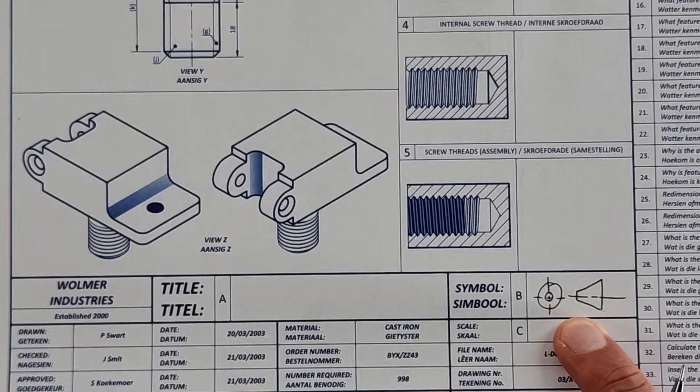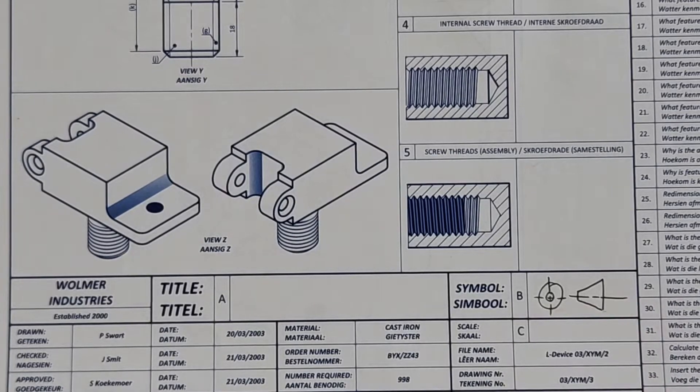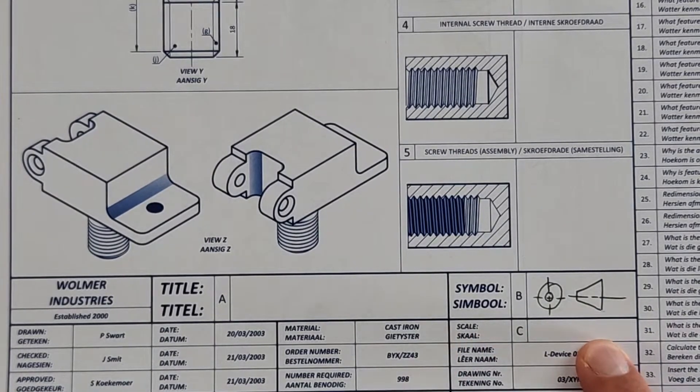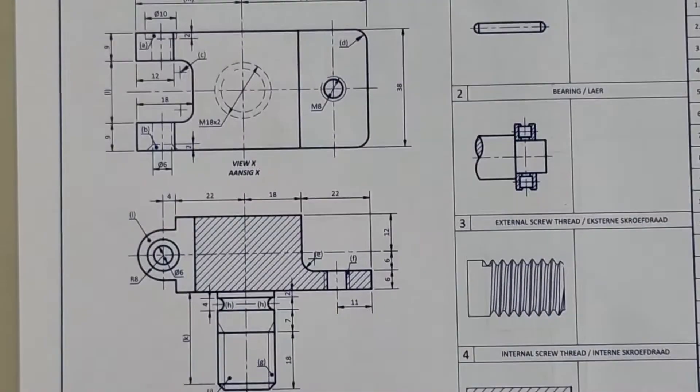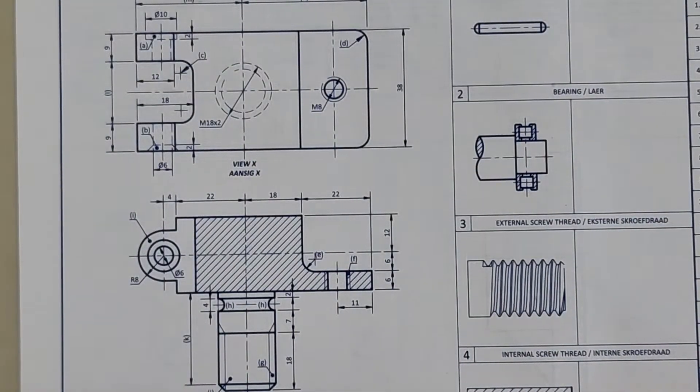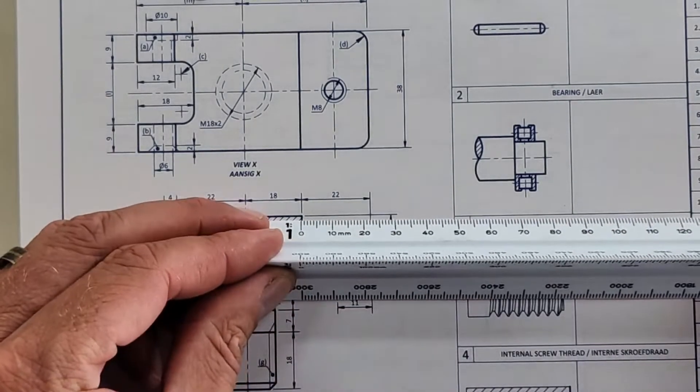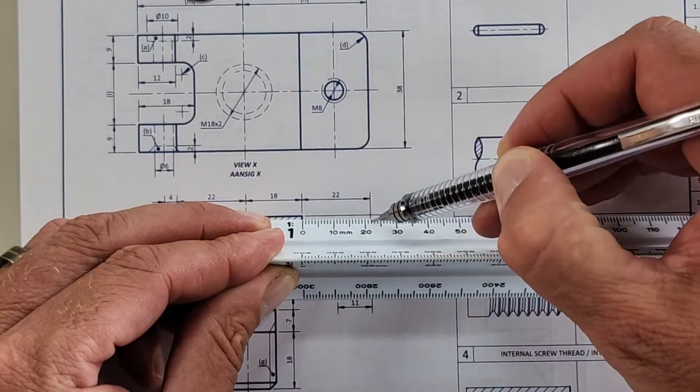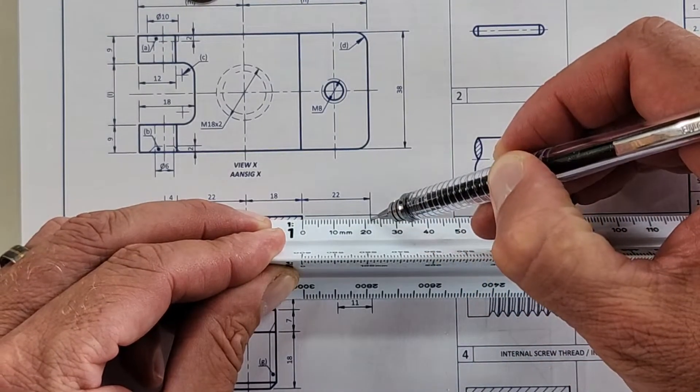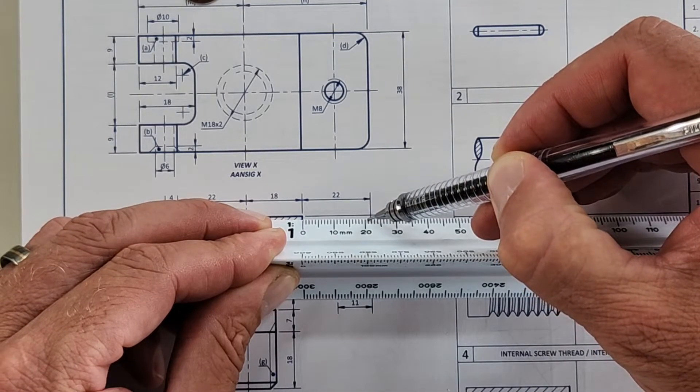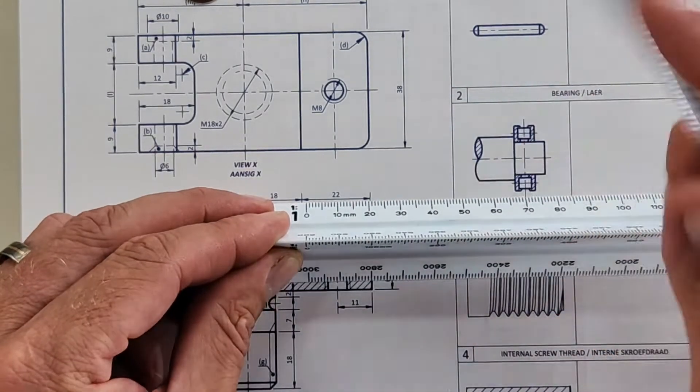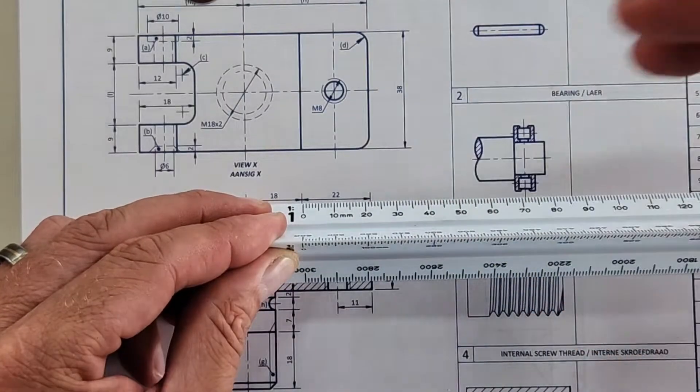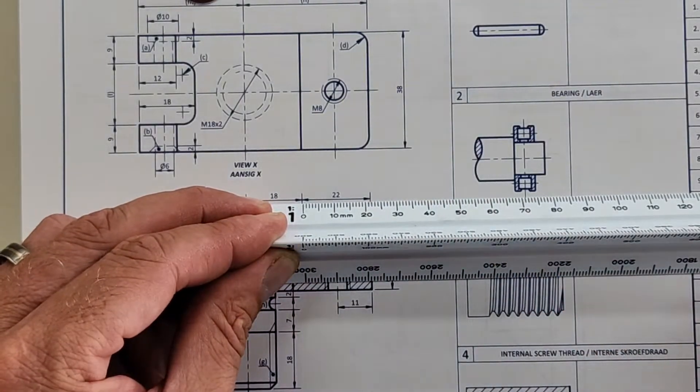Number three, determine the scale of the drawing and print it in the provided space. So that's left open for us. We can go to any one of these measurements. Let's take this one. It says 22. Now, if I take my ruler and I check on scale 1 to 1 and it is 22, then this is scale 1 to 1, baby.